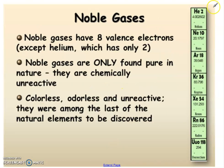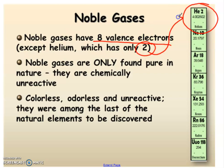Last but not least, we have our noble gases. Noble gases each have eight valence electrons, except for helium. Helium has two valence electrons, but the key is that it has a full valence shell.